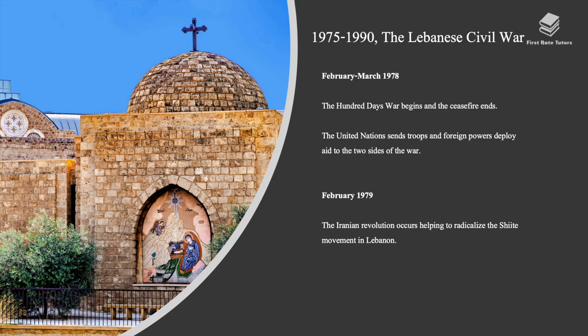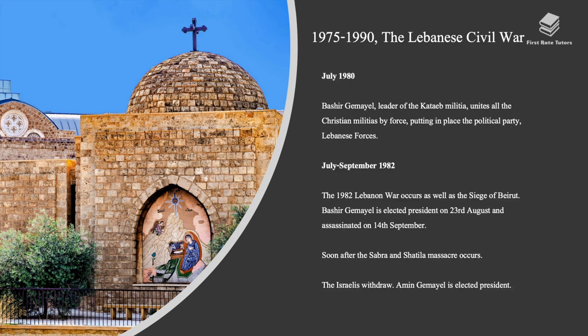Between February and March 1978, the Hundred Days War began and the ceasefire ended. The United Nations sent troops and foreign powers deployed to both sides. In February 1979, the Iranian revolution helped radicalize the Shiite movement in Lebanon. In July 1979, Bashir Gemayel, leader of the Kataeb militia, united all Christian militias by force, establishing the Lebanese Forces political party. Between July and September 1982, the Lebanon War occurred along with the Siege of Beirut. Bashir Gemayel was elected president on August 23rd and assassinated on September 14th.